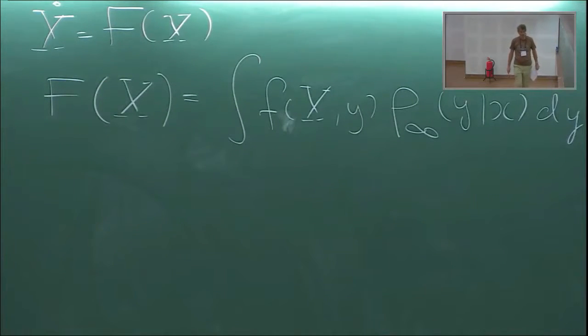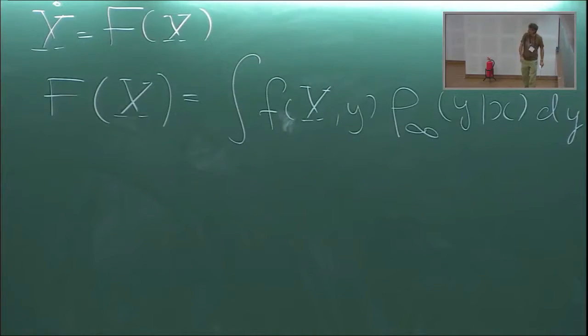We only want to know the averages; we're not interested in the little wiggles and individual realizations. We want the average — that's what we're after. This is the equation that tells us the average behavior.